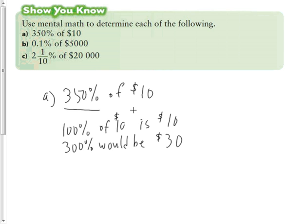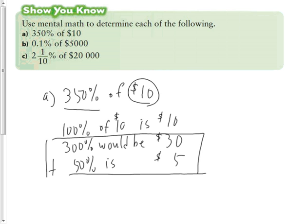So right now we know 300%, and the next thing we have to do is figure out 50%. If you go back to grade 7, 50% is half of a number. So 50% of $10 is $5. If I add 300% to 50%, I get 350%, and 350% would be 30 plus 5, which is $35.